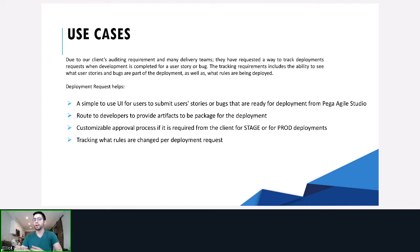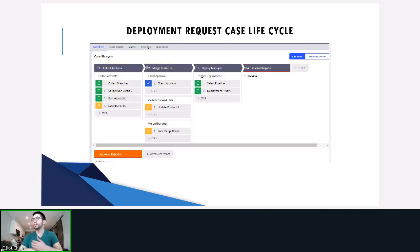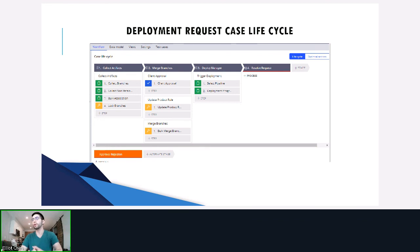In addition, it provides a customizable approval process in case you need stakeholders to approve the deployment — for example, an emergency deployment to production. There are four stages to the deployment request lifecycle: collecting the artifacts, merging the branches, obtaining client approval if needed, and then integrating with deployment managers to select your pipelines, trigger the deployment, and track the progress of it.